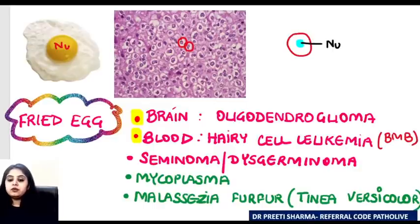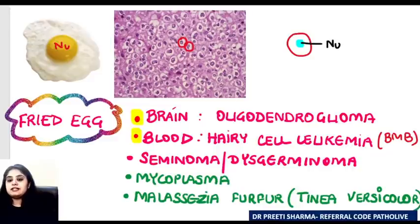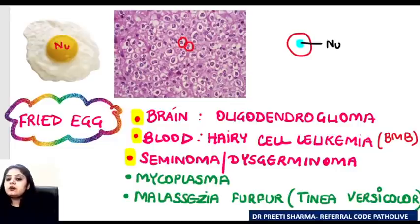The aspirate of hairy cell leukemia shows a dry tap. The bone marrow biopsy shows fried egg appearance. When talking about genital tumors: seminoma of the testis and dysgerminoma of the ovary are similar tumors. So oligodendroglioma in the brain, hairy cell leukemia, seminoma, and dysgerminoma all show fried egg appearance.